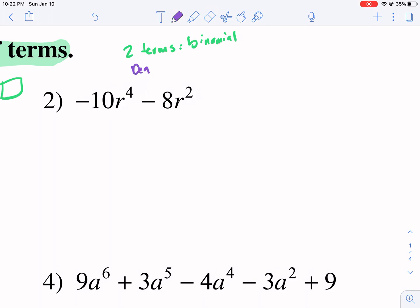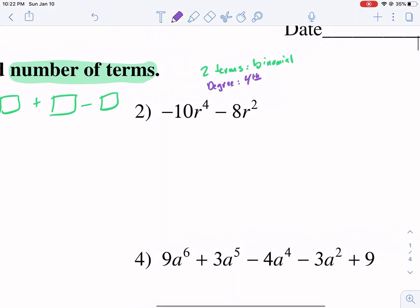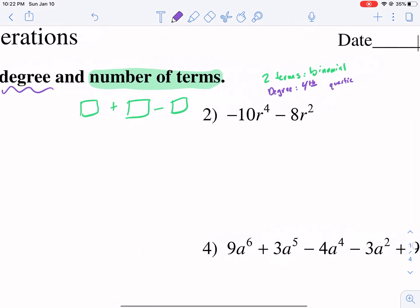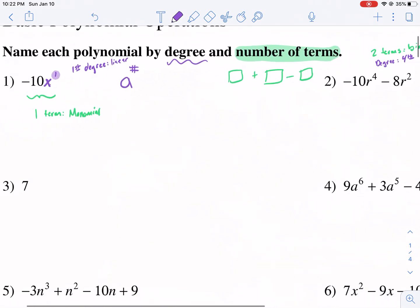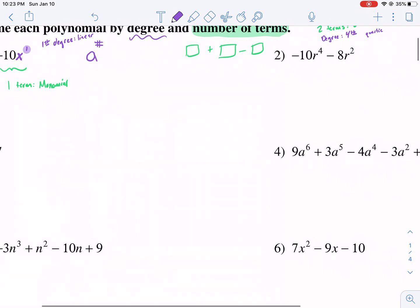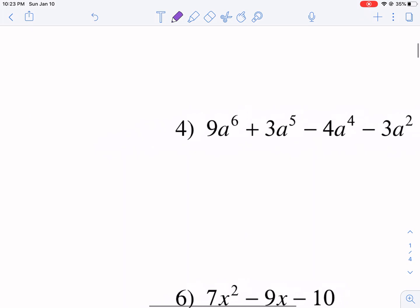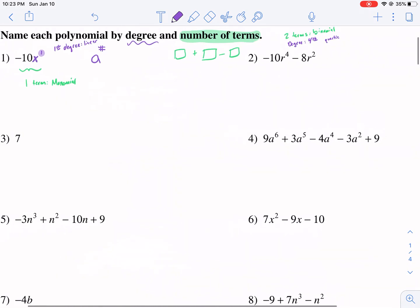Now, what is the highest degree? We're talking about the degree of the polynomial, we're talking about the highest degree. So there's a four, and there's a two. So how do you know which one to pick? You pick the highest one. So this is a fourth degree polynomial. And I think that is called quartic, but you don't really need to know that.